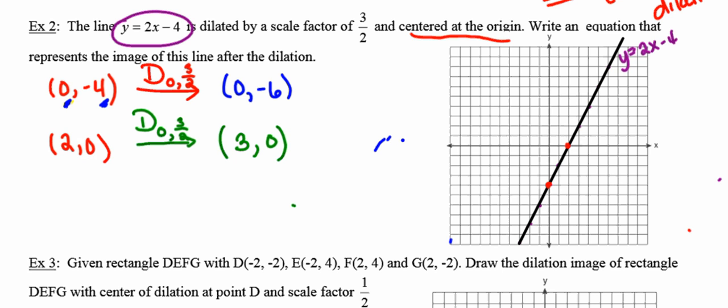And again, if you're unsure about any of those calculations, grab your calculator and let that do the heavy lifting for you. So (0, -6) is going to be right there. (3, 0) is going to be that point right there.